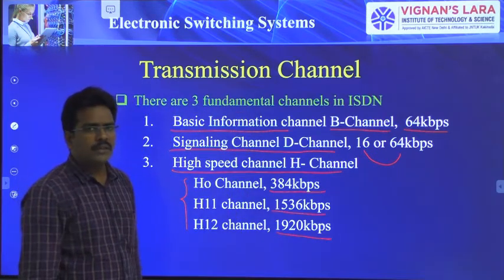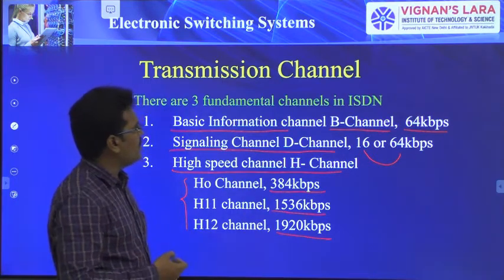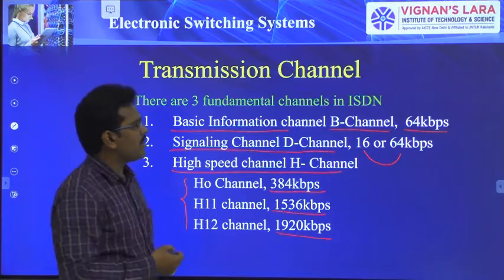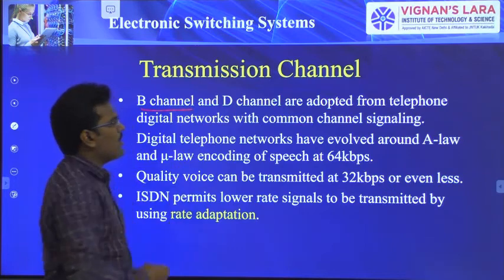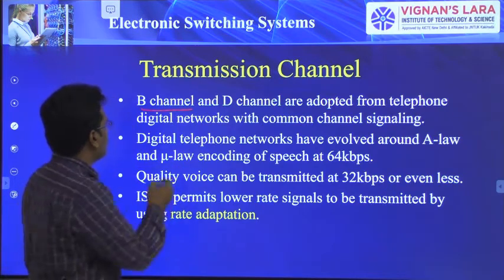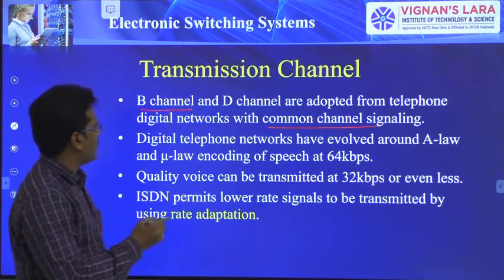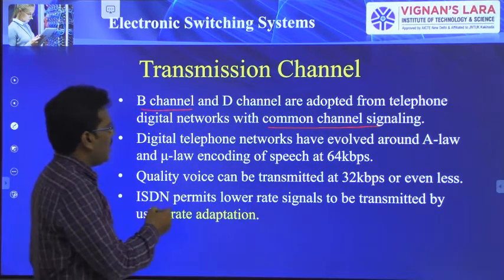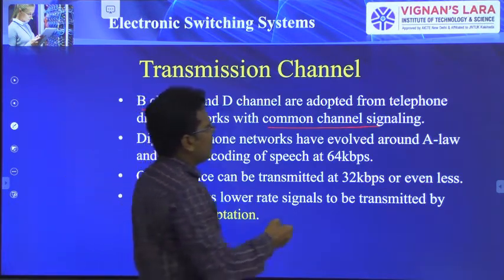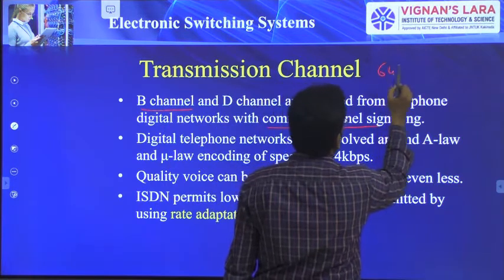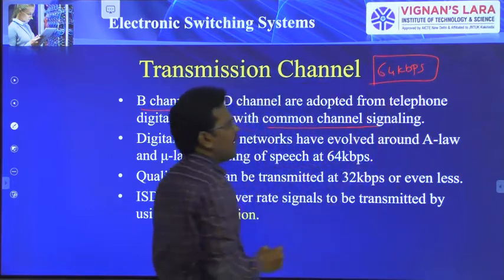Based upon the application or service, we use different types of channels. B-channel and D-channel are adapted from telephone digital networks with common channel signaling. These telephone networks work under 64 kbps.